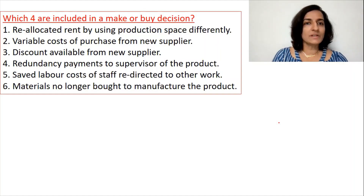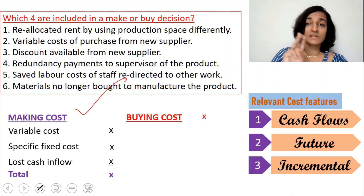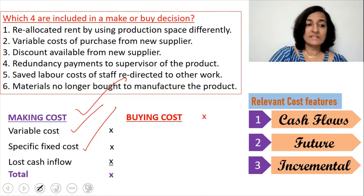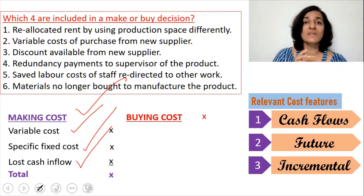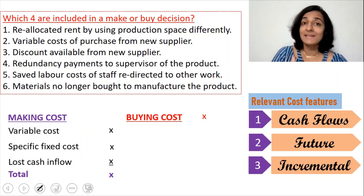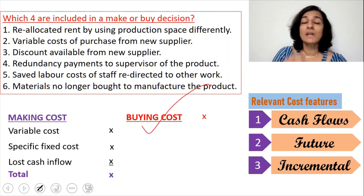Welcome back. Let's start with the MCQs straight away. Which four are included in a make or buy decision? Under make cost, there are three items: variable cost, specific fixed cost, and lost cash inflow. If items fall under any of these three categories, we have to include them in a make or buy decision. The next item to consider is buying cost, which is the purchase price you pay for the product from the open market.